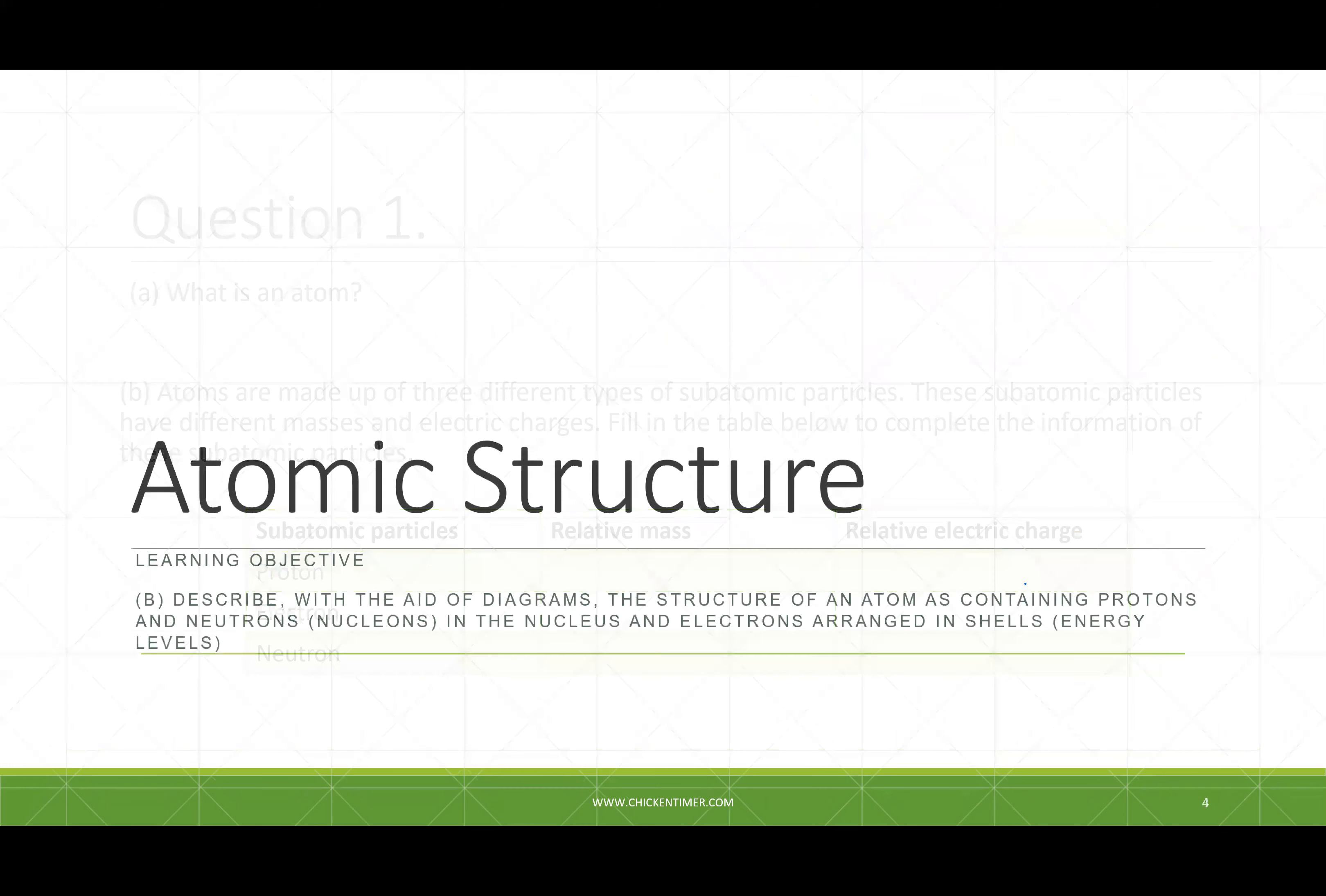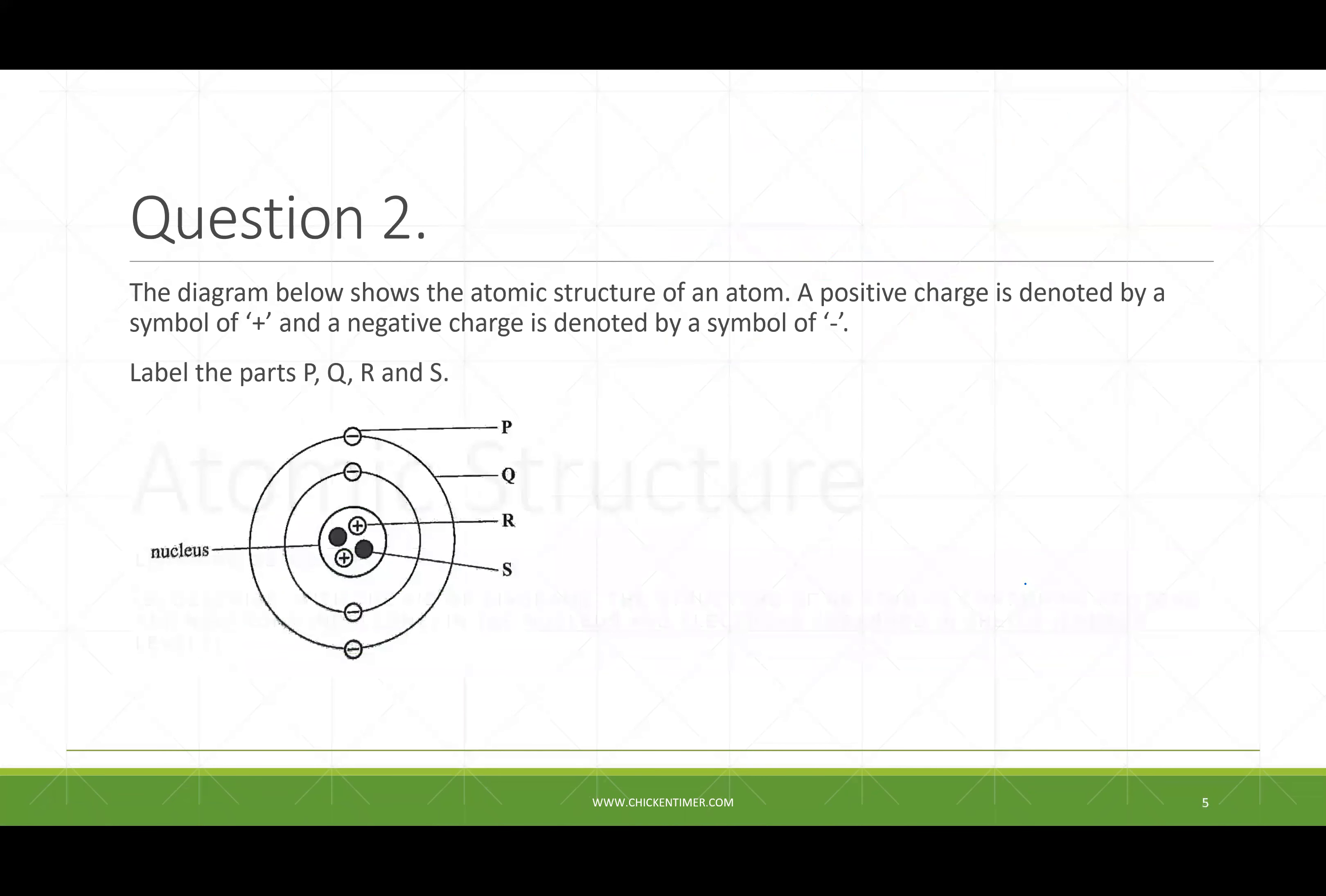If you look at the next one. Now, since I've gone through that, the diagram below shows the atomic structure of an atom. The positive charge is denoted by the positive sign, and the negative charge is denoted by a negative sign. So then in this question we are supposed to label P, Q, R, and S.